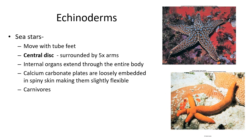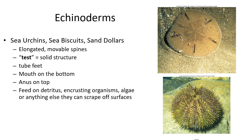Sea stars move with tube feet and are predators in most of the ecosystems they live in. Their central disc has at least five arms, sometimes 10, 15, or 20 depending on the species, and their internal organs extend throughout their entire body — which allows a severed arm to grow into a whole new sea star. The hard part is made out of calcium carbonate, embedded throughout their skin. They are mostly carnivores, eating clams, oysters, and similar prey by prying them apart.